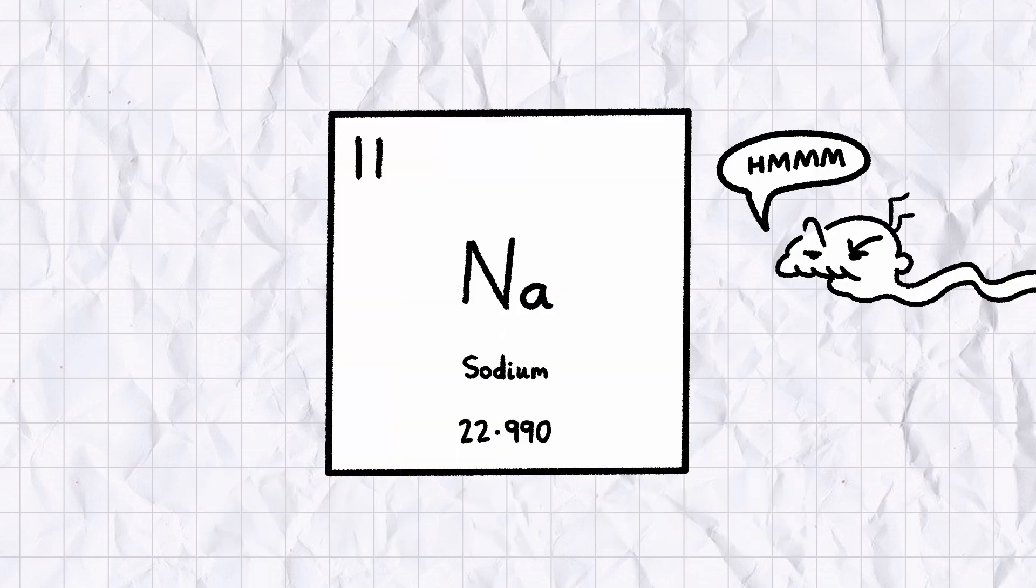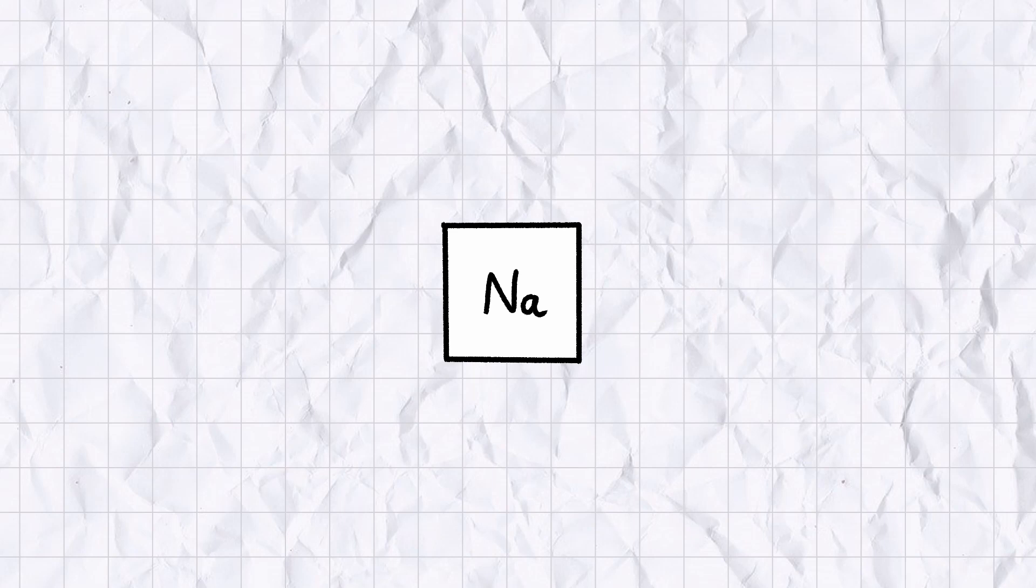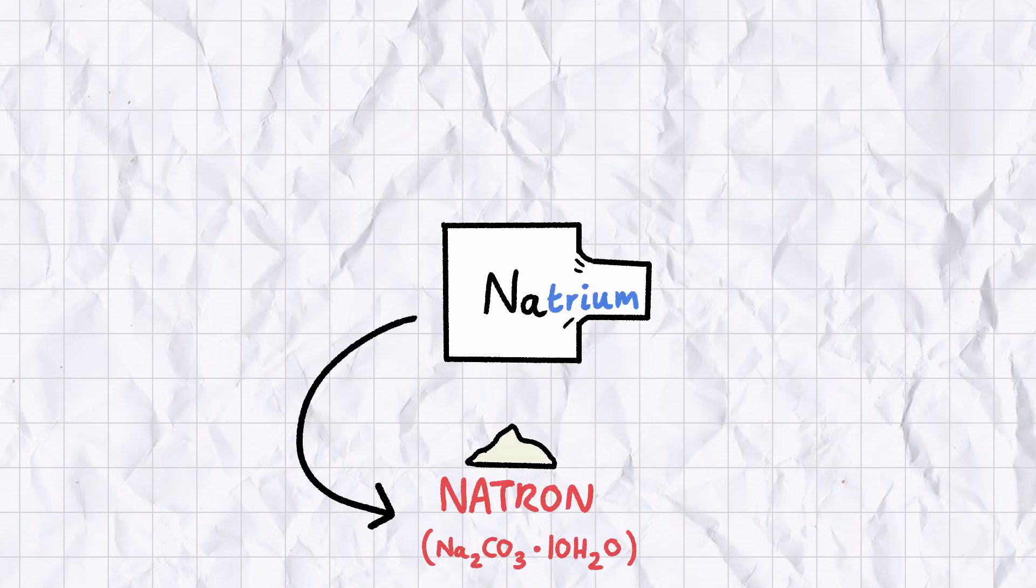Now those of you with a keen eye and a passing familiarity with your ABCs may have noticed sodium's rather unusual chemical symbol, a symbol which ironically doesn't contain a single letter from the word sodium. Na is an abbreviation of the Latin word natrium, which is a reference to natron, a flaky sodium salt used by the ancient Egyptians to preserve mummies.